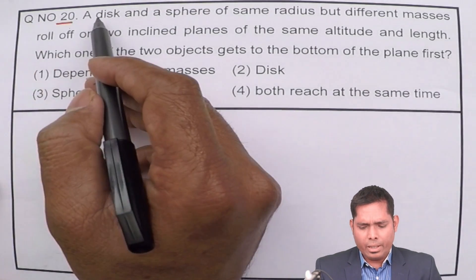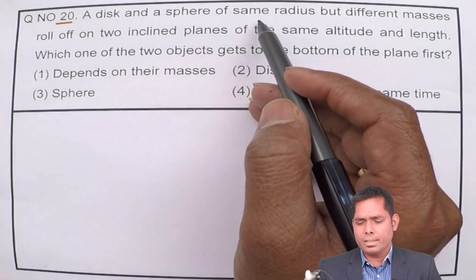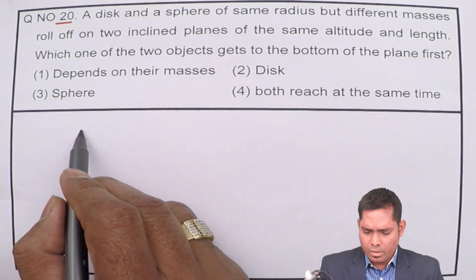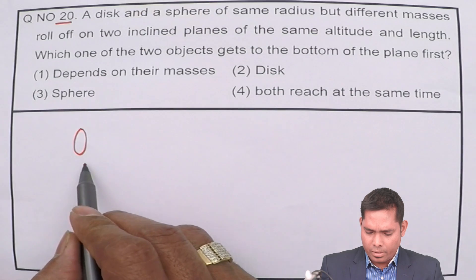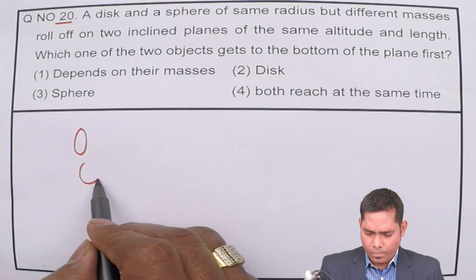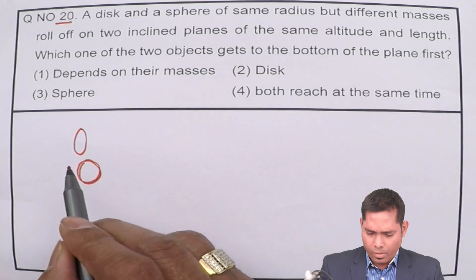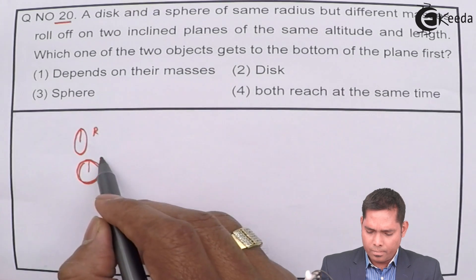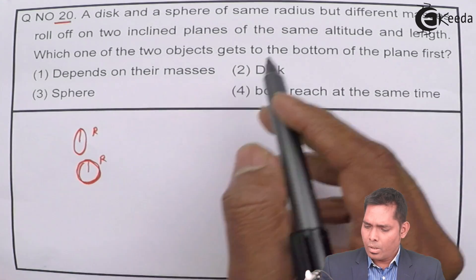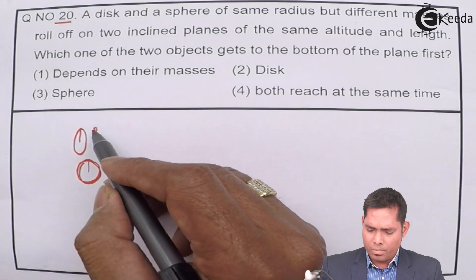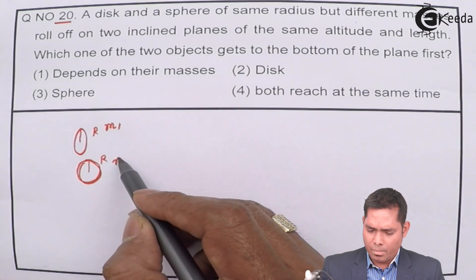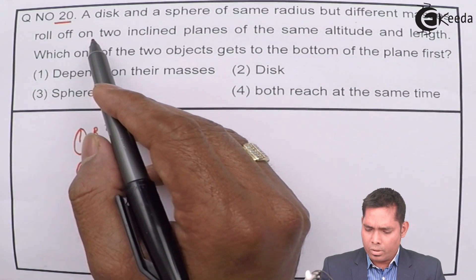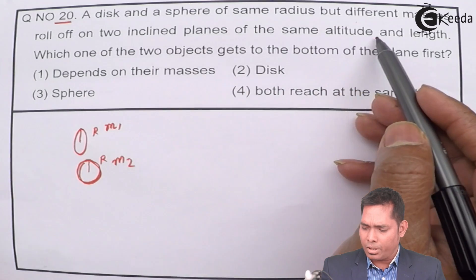A disk and a sphere of the same radius R but different masses — suppose the disk has mass M1 and the sphere has mass M2 — roll off on two inclined planes of the same altitude and length.